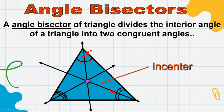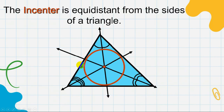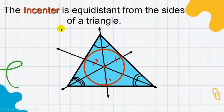The point of concurrency of angle bisectors is called the in-center. For perpendicular bisectors, the point of concurrency is the circumcenter — the triangle is inscribed in a circle. For angle bisectors, it's the opposite: the circle is on the inside. The in-center is equidistant from the sides of the triangle — if one distance is 3 cm, the rest are 3 cm also. Remember, angle bisectors can also be lines, line segments, and rays.